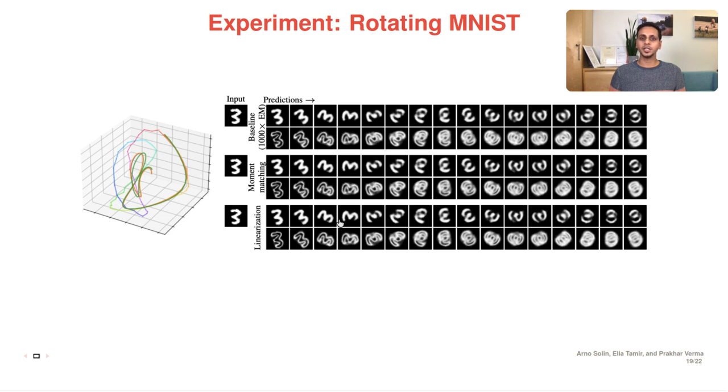This slide shows the qualitative results where we compare the moment matching output and the linearization output with the baseline. The top row shows the mean of the prediction, whereas the second row shows the standard deviation. On the left, we can see the latent trajectory of all these methods. The quantitative results are presented in the paper.